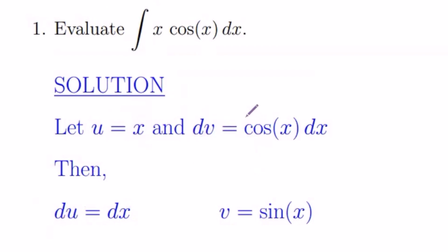To find v, you have to integrate both sides. So when you take the integral of both sides, integral of dv is v. Integral of cosine x dx is sine x.